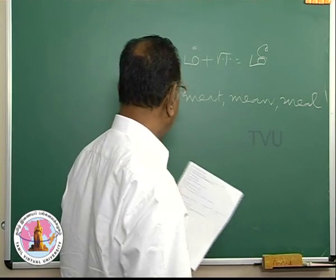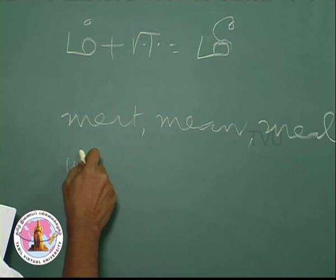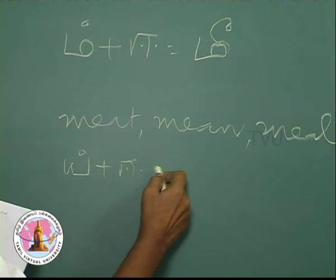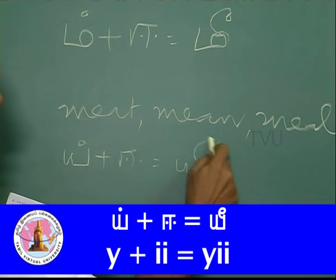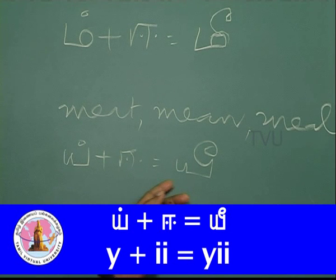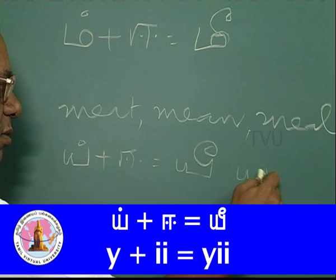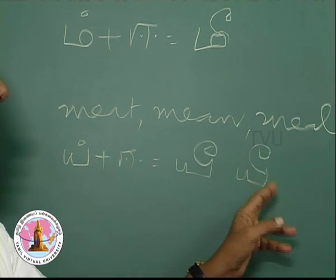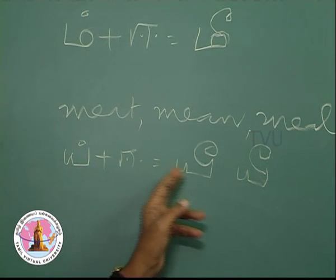Then we go to the next letter, ya. Ya plus ee will be yee. You write ya and then have the marker on the right as we did for pa. This is ya plus ee.